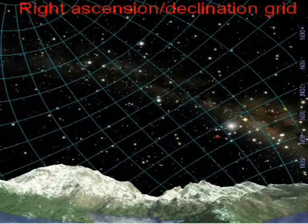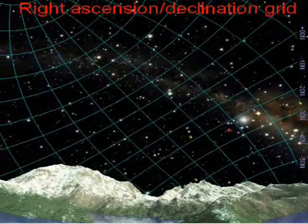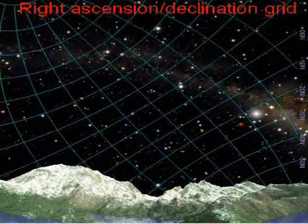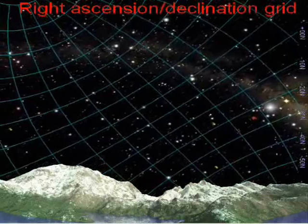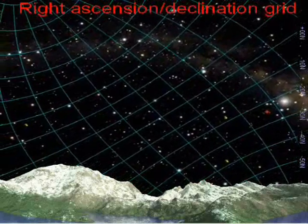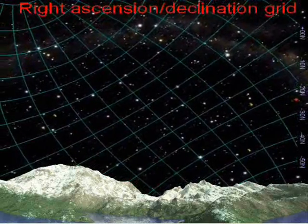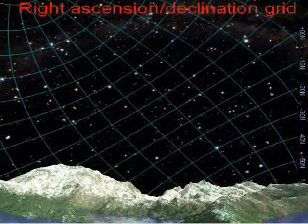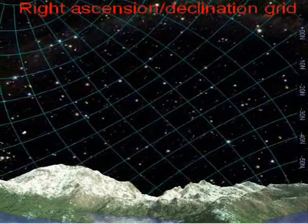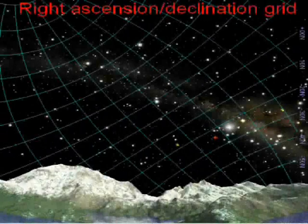Astronomers use the vernal equinox, the location where the sun crosses the celestial equator during its apparent annual motion against the background stars, as a starting point for right ascension. The term right ascension comes from the fact that when viewed from the equator, all stars rise, or ascend, at right angles to the horizon, so their times of rising are called their times of right ascension.